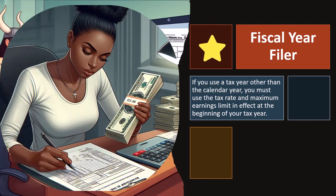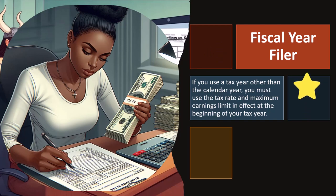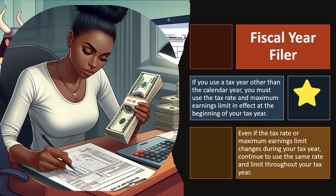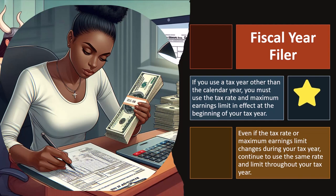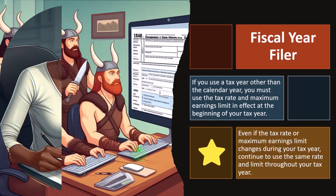Fiscal year filer: if you use a tax year other than the calendar year, you must use the tax rate and maximum earning limit in effect at the beginning of your tax year. When we have a Schedule C, we're usually using a calendar year. But if it's not a calendar year, you have some complications with the calculations. Even if the tax rate or maximum earning limit changes during your tax year, continue to use the same rate and limit throughout your tax year.